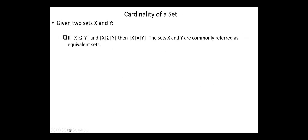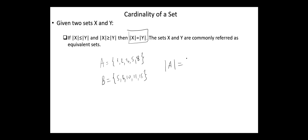Given two sets X and Y, if the cardinality of X is less than or equal to the cardinality of Y, and the cardinality of X is greater than or equal to the cardinality of Y, then the cardinality of X equals the cardinality of Y. These two sets X and Y are commonly referred to as equivalent sets. For example, if A = {1, 2, 3, 5, 8} and B = {5, 6, 10, 11, 15}, these two sets are equivalent since |A| = |B|. If X = {1, 2} and Y = {3, 4, 5, 6}, then |X| < |Y|.